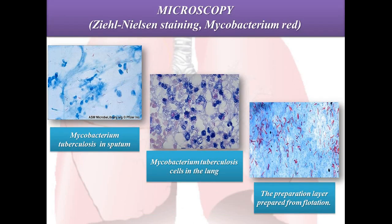The disadvantage of the Ziehl-Neelsen method is that in one milliliter of sputum there must be more than 50,000 to 100,000 Mycobacterium tuberculosis for you to be able to detect them. If there are fewer than 50,000 mycobacteria per milliliter, you will not be able to detect them by this microscopy method.